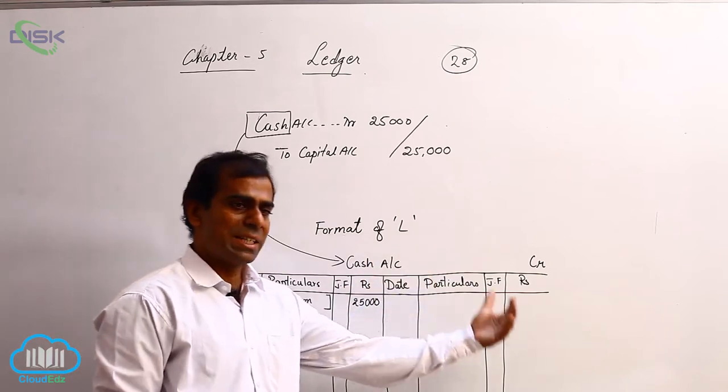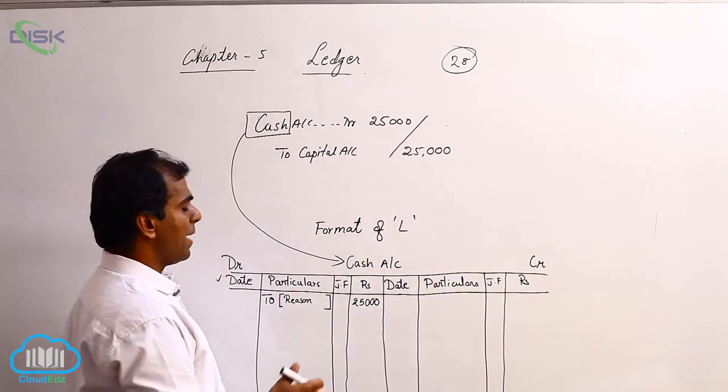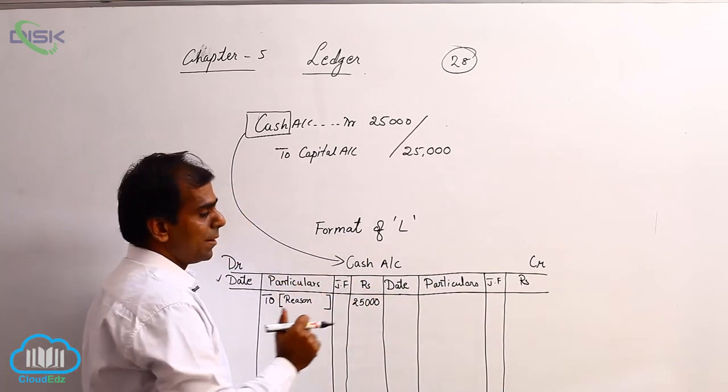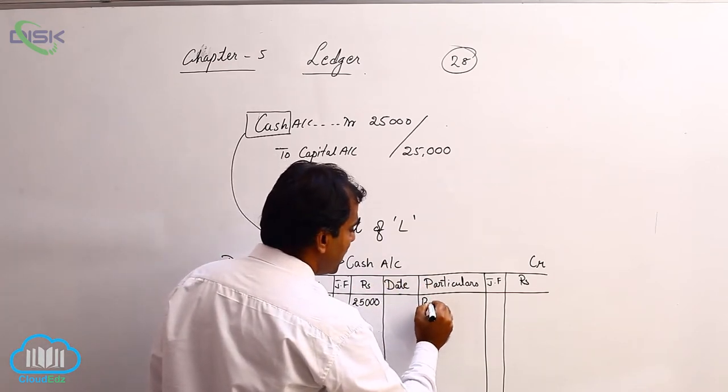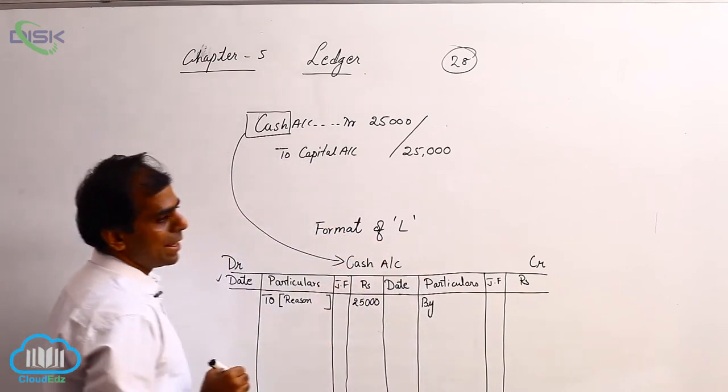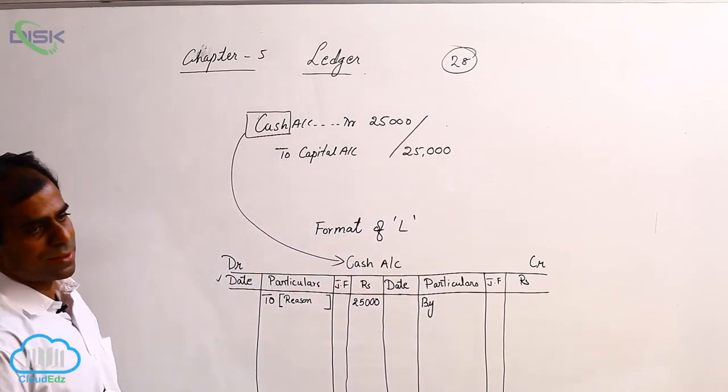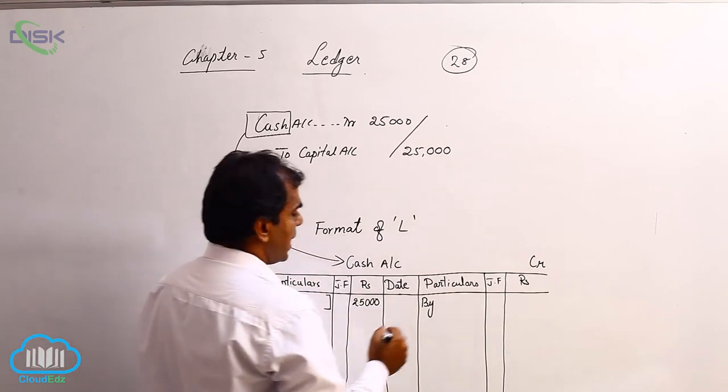On the other side also, it is same. We have date, we have particulars. On the credit side, usually, we use the word 'by' as a prefix. It is a constant.